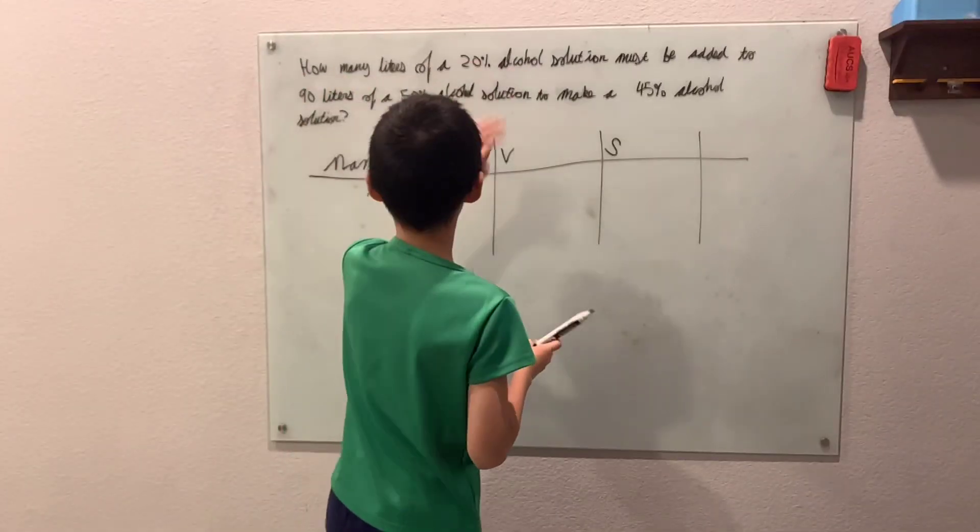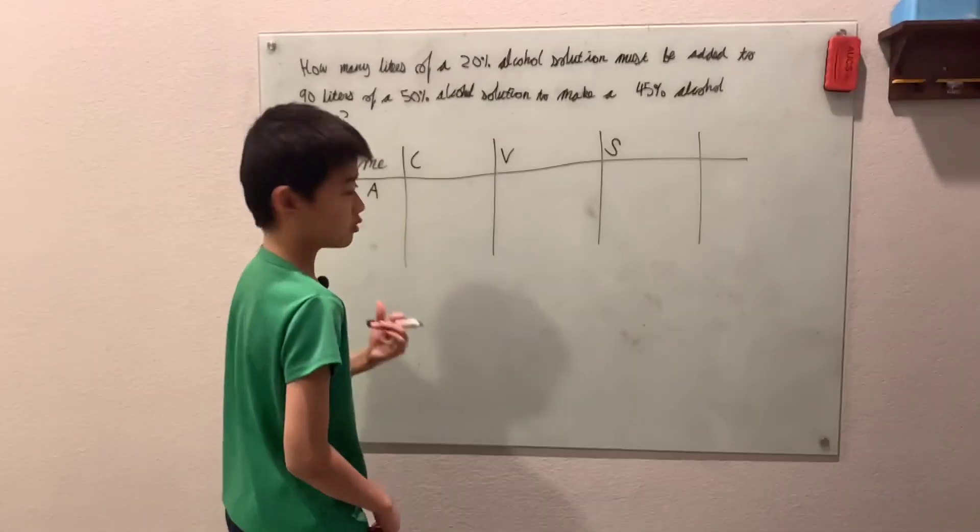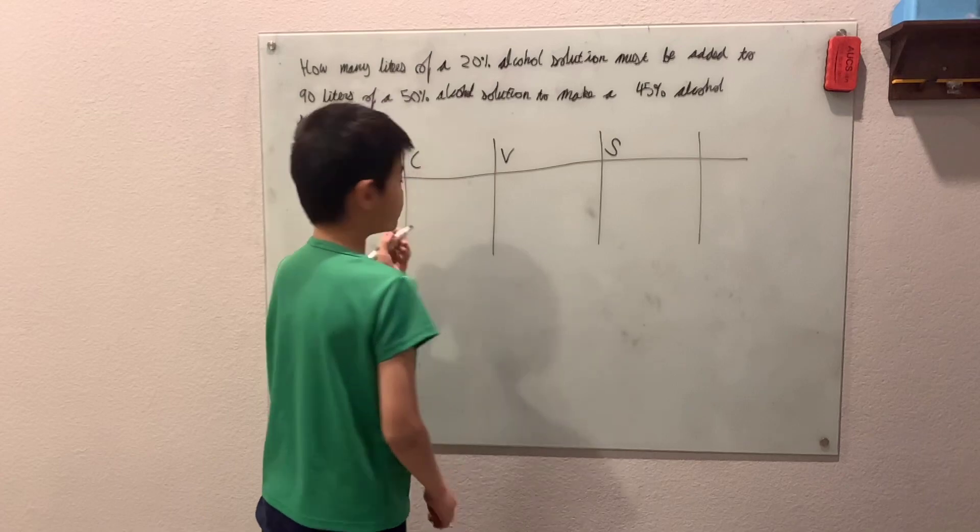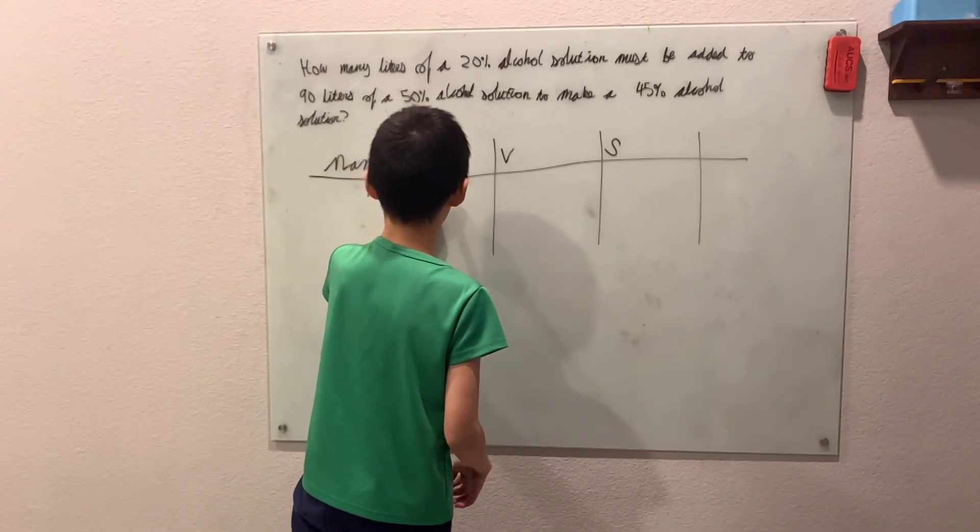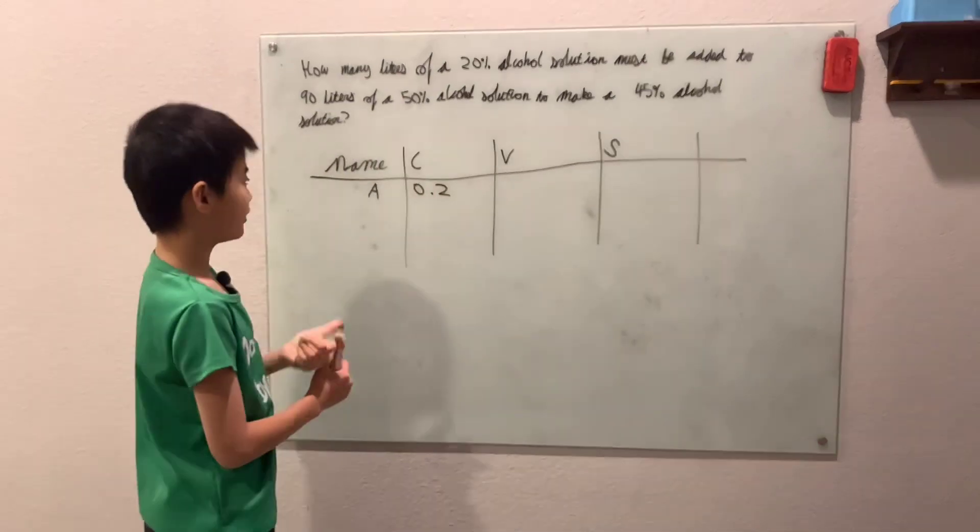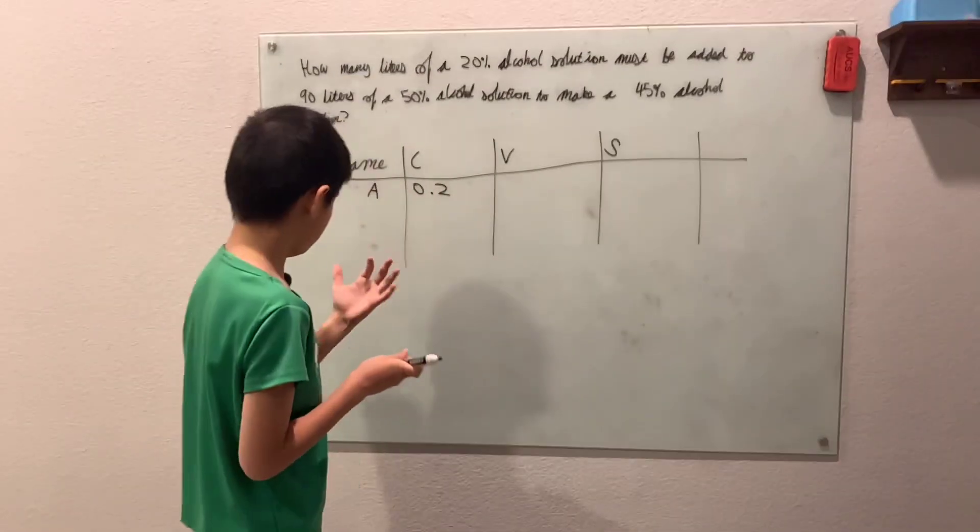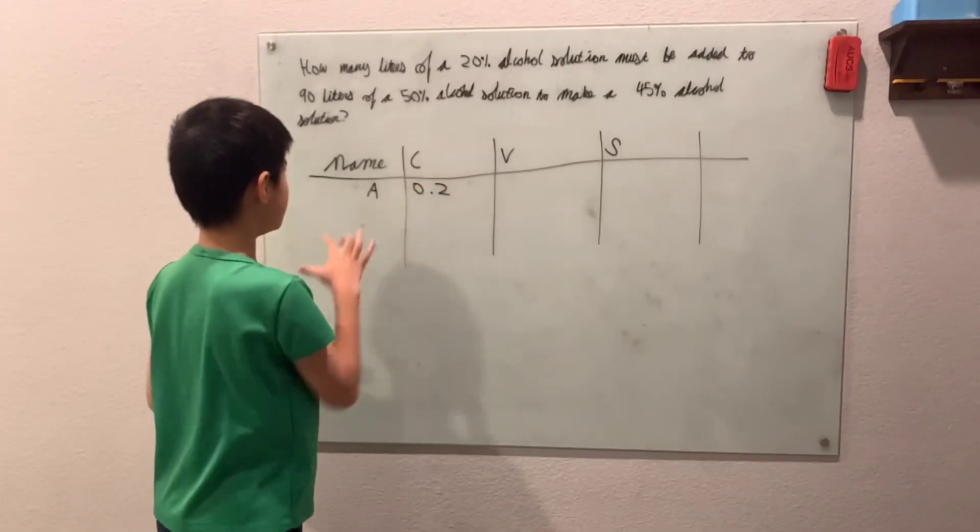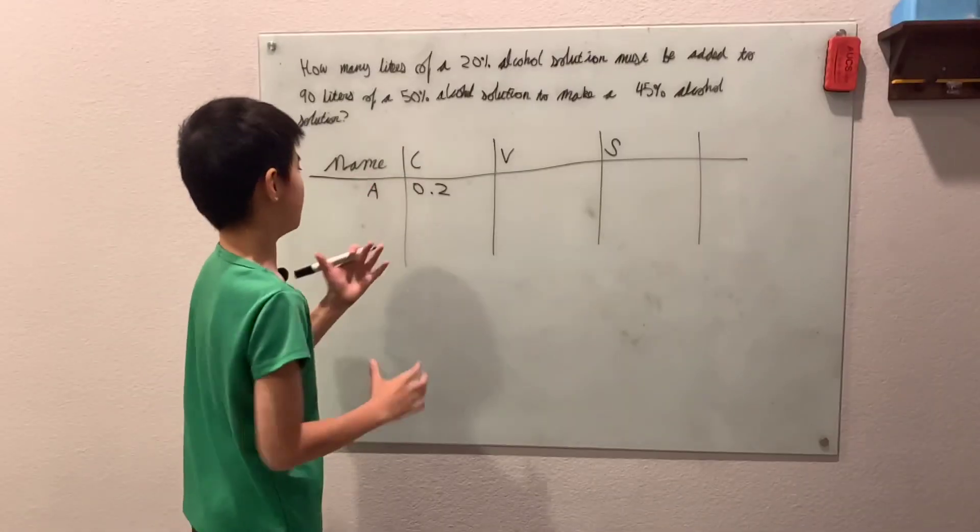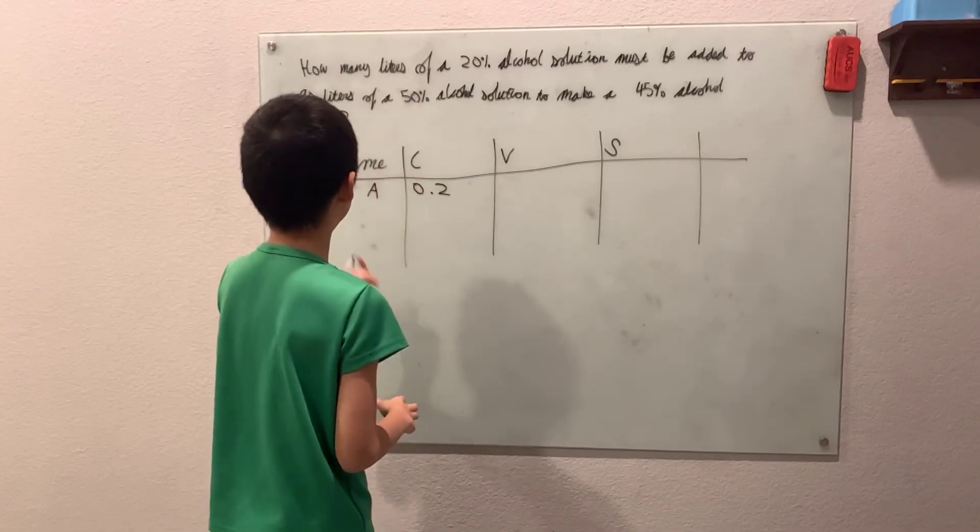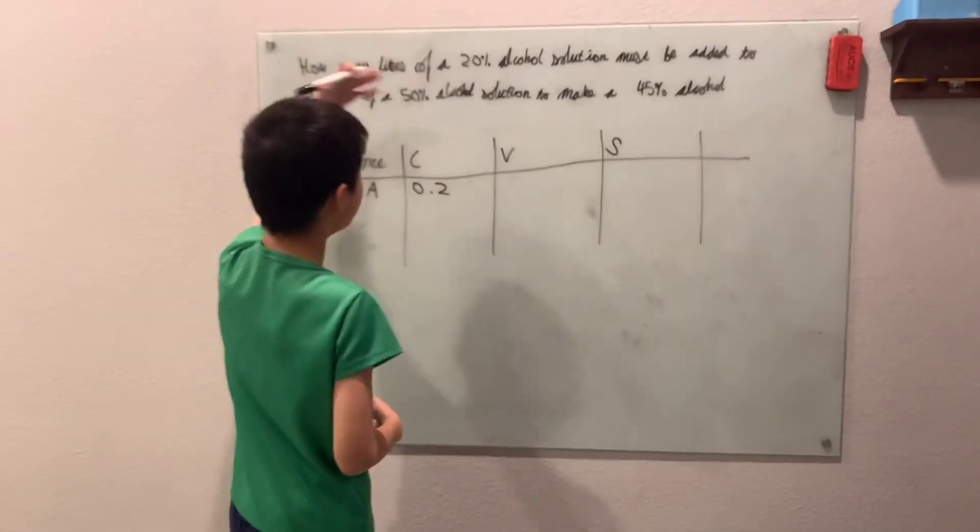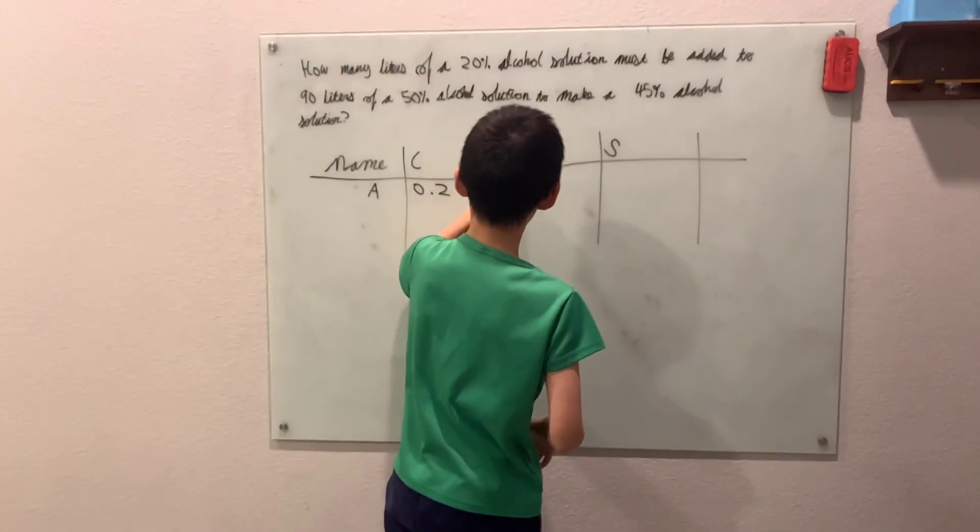So, in this first one we have a 20% alcohol solution. So that means the C column or the concentration column would be 0.2, or in other words 0.2 of the volume is the alcohol or concentrated alcohol. So V would be volume, which we don't know. We want how many liters, so V we don't know, we'll just call it X.